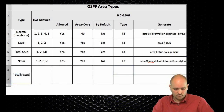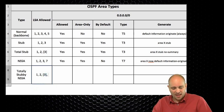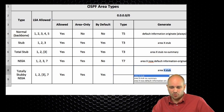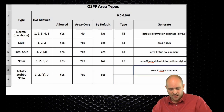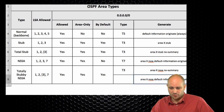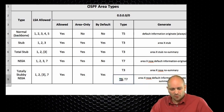Similarly to total stub, we have a totally stubby NSSA. Allowed types are 1, 2, and 7, with only the default route type 3 permitted — all other type 3s are filtered. The default route is allowed and generated by default. There are two configuration options: 'area X nssa no-summary' generates a type 3 default, while 'area X nssa default-information-originate no-summary' generates both type 3 and type 7. In the latter case, the type 3 wins and is used by other routers, but both are generated.